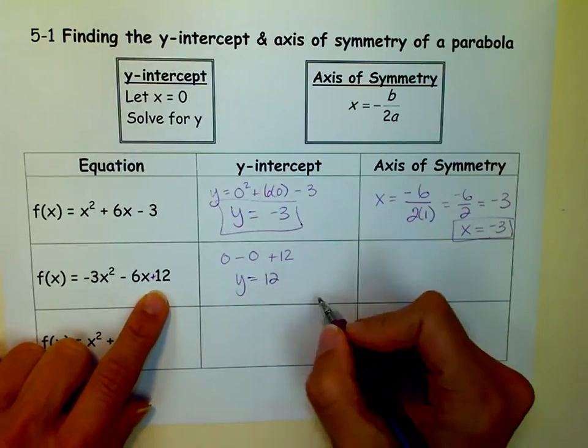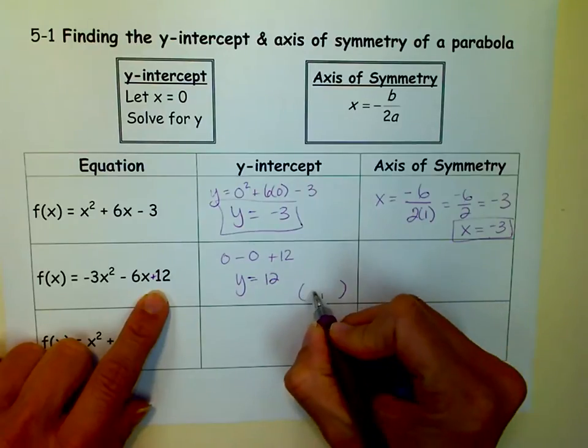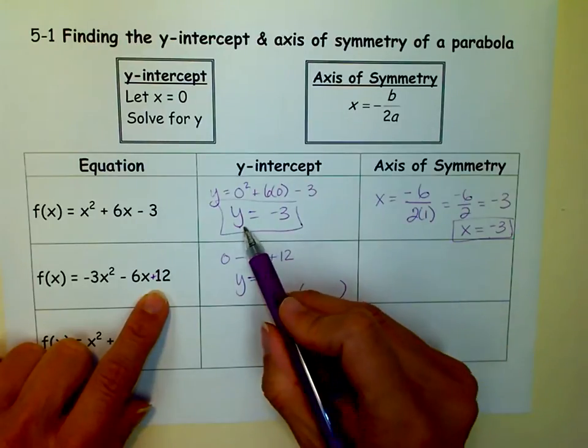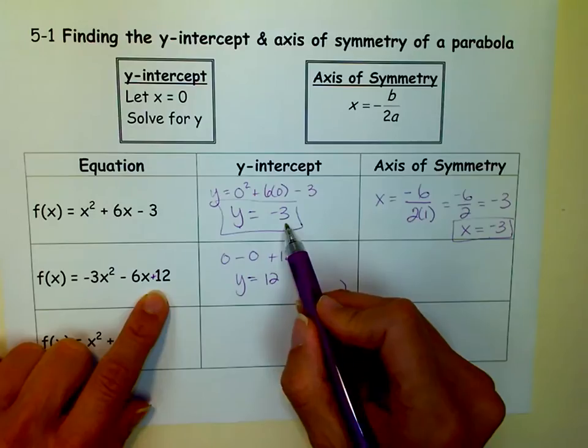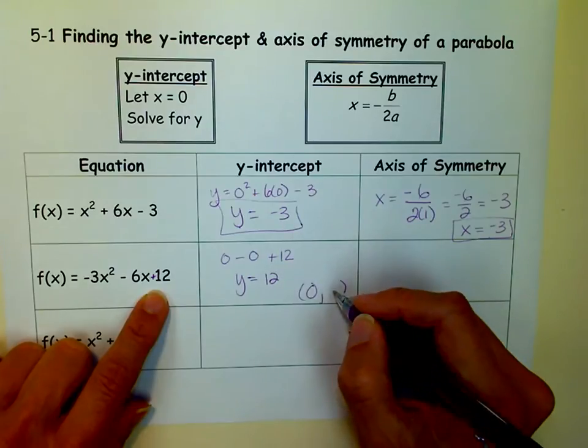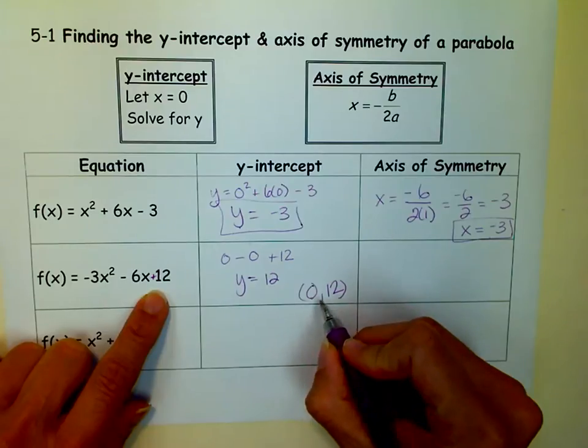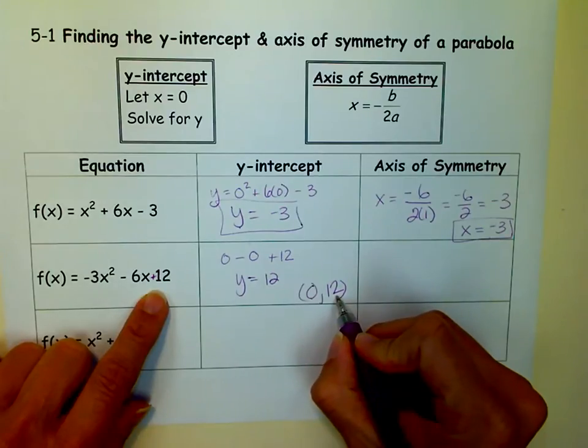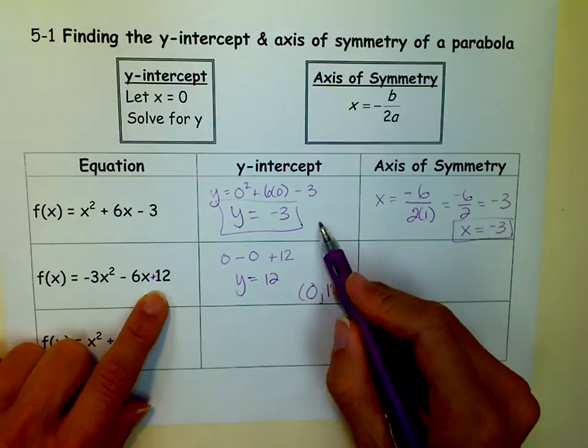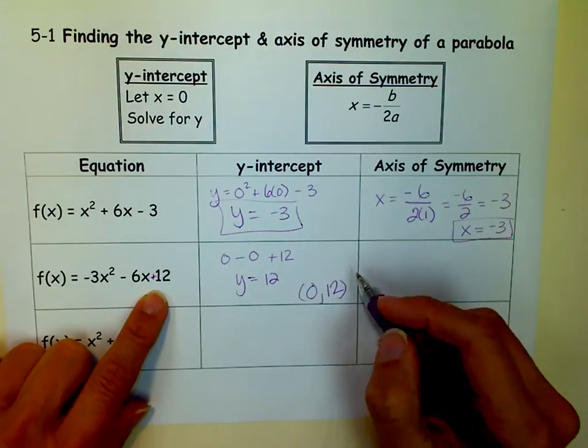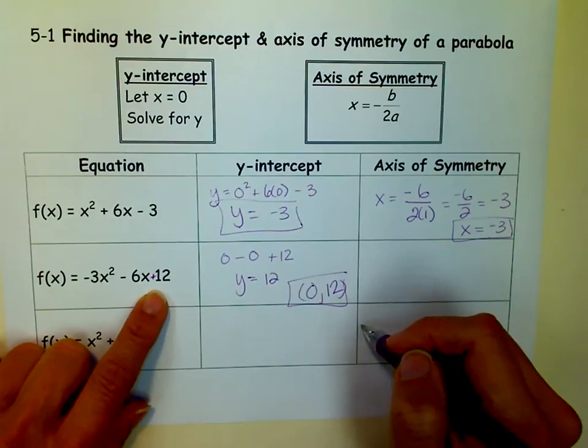Now this is a point. If you wanted to make it a point, sometimes teachers are okay with you saying y equals negative 3. Sometimes they want the coordinates of the point, and since we put 0 in for x, our x is 0, and we got y equals 12 when we did that. So our point would be 0, 12. Just like up here, it would be 0, negative 3. So you just have to find out which way the book or your teacher wants it. That is the y-intercept.